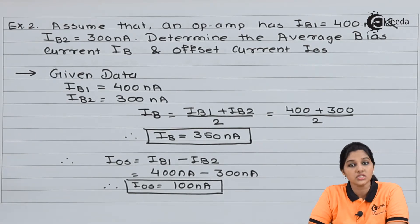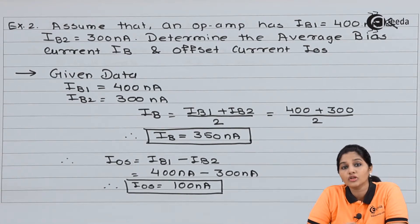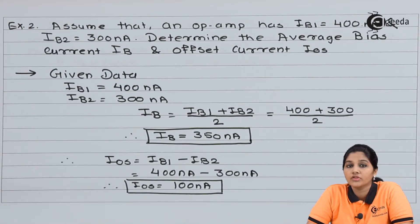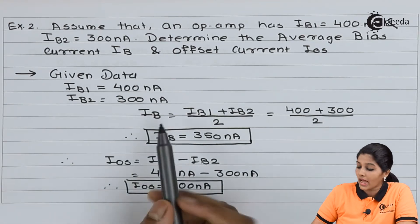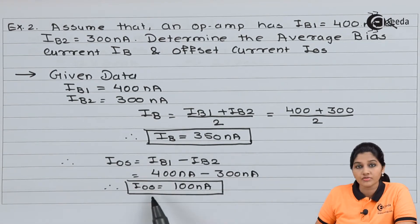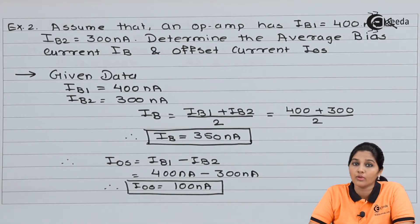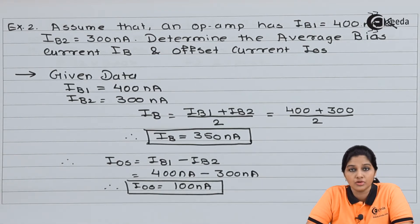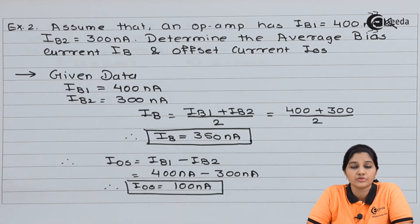So in this way, if the value of current is known, we can easily calculate the average bias current and offset current IOS by using values of IB1 and IB2. Now let's move on to the next problem.